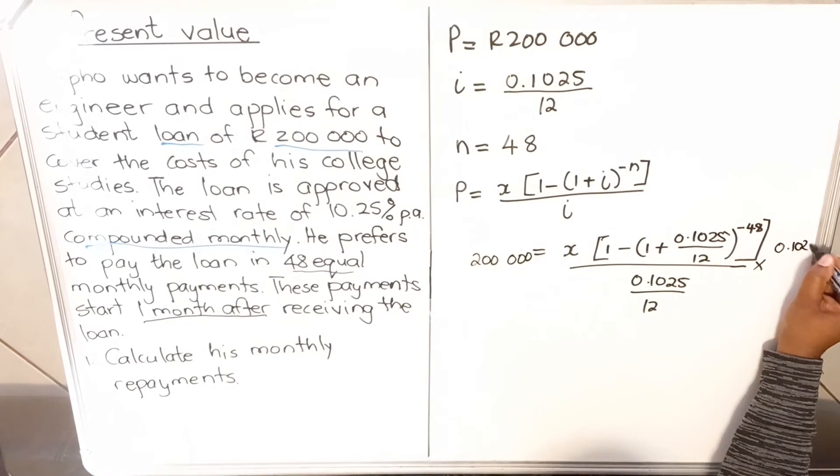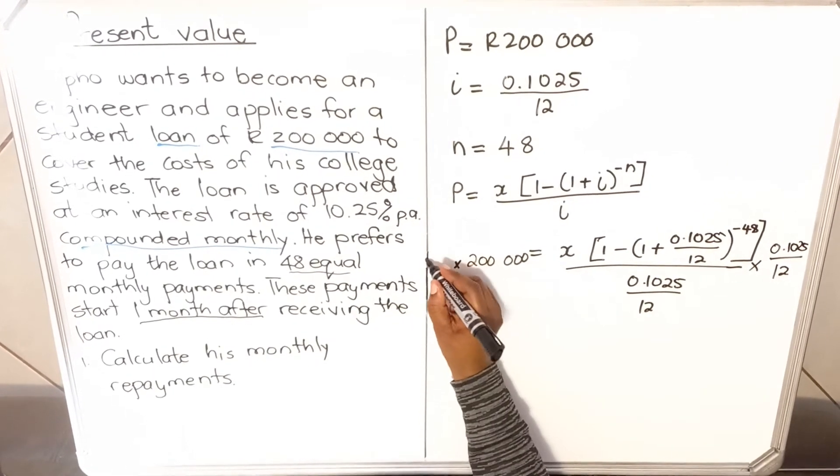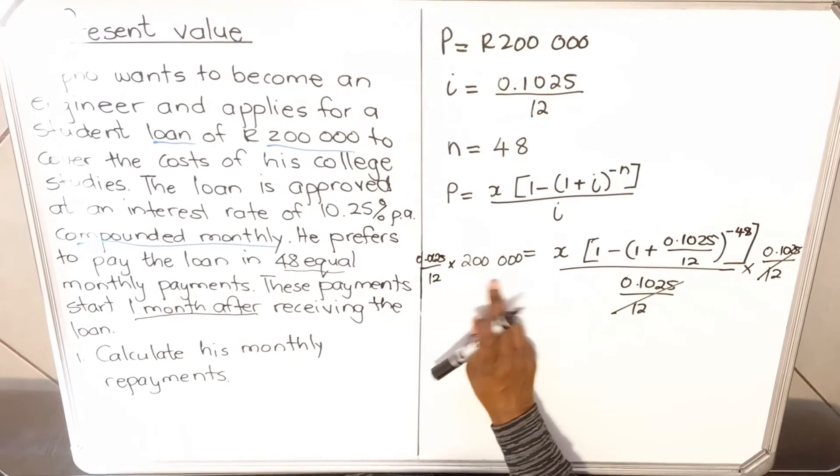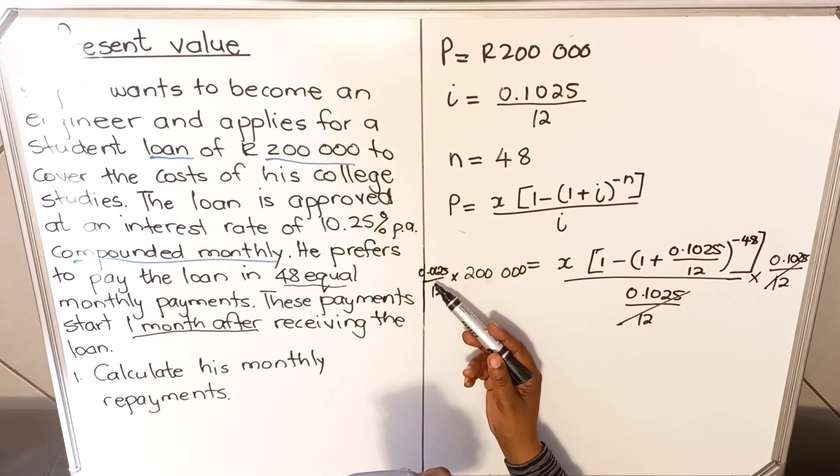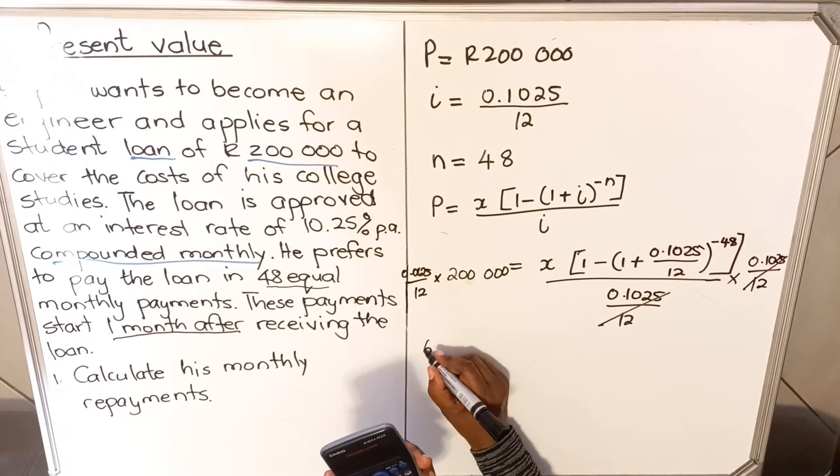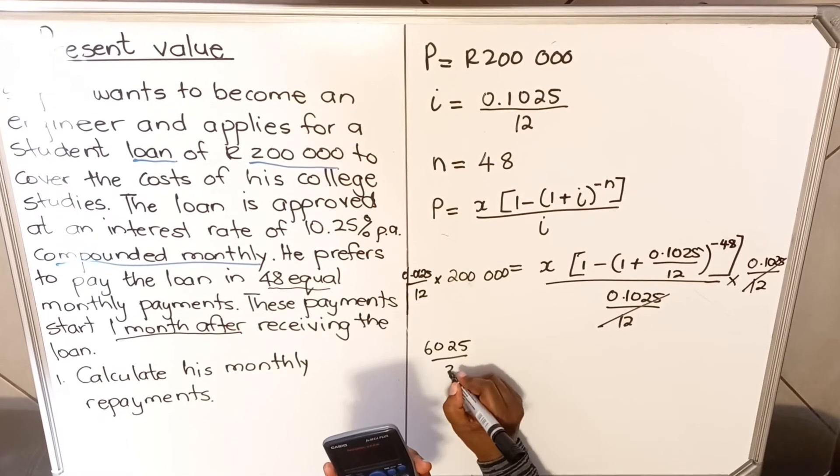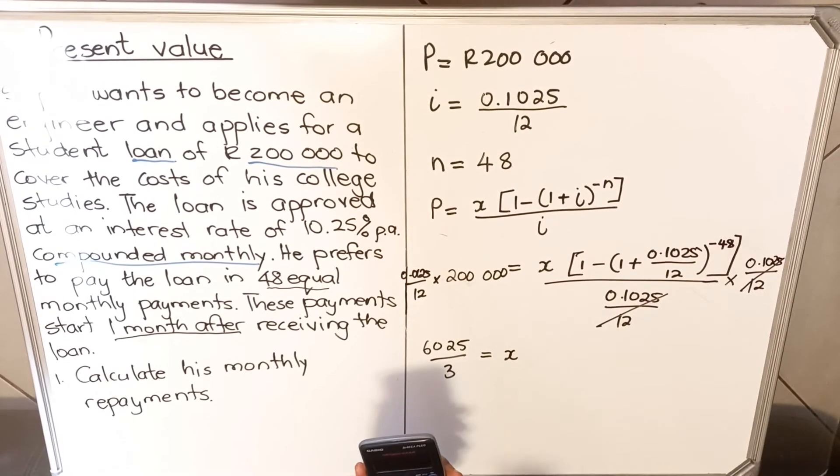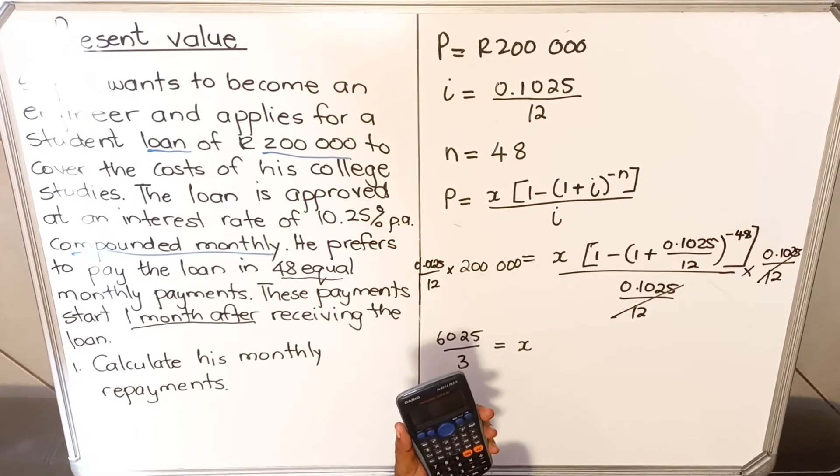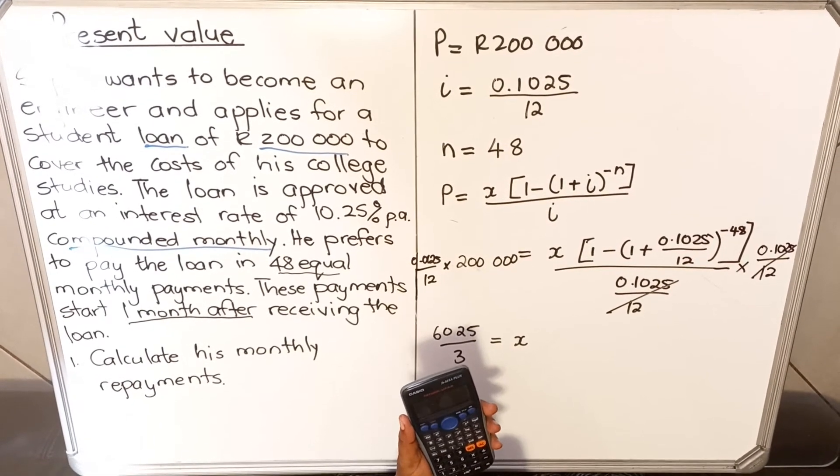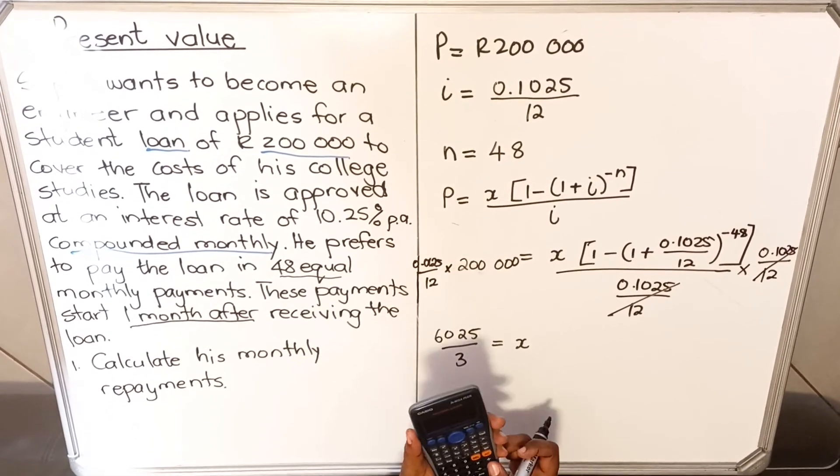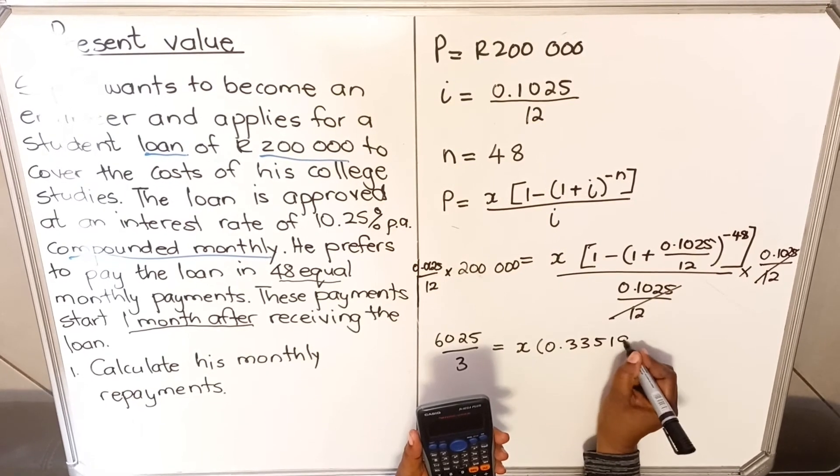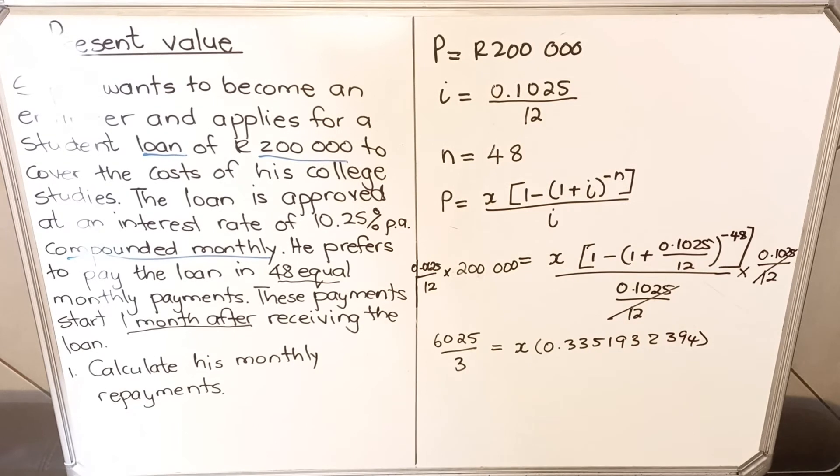This side multiplied by 0.1025 divided by 12, this will cancel that. Then I take my calculator and multiply. If I multiply 0.1025 multiplied by 200,000, I get 20,500. Divided by 12. Whatever fraction you get here, don't round it off, leave it as a fraction. Then here you multiply all of this into your calculator. You have 1 minus, open bracket, 1 plus 0.1025 divided by 12, close bracket, to the power minus 48, equals. Then I get multiplied by 0.3351932394. Try to keep as many decimals as you can.